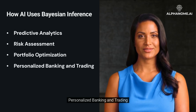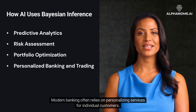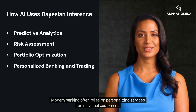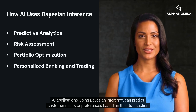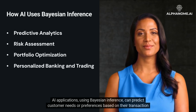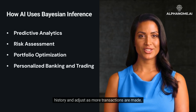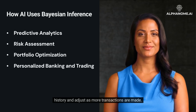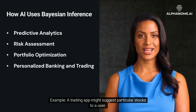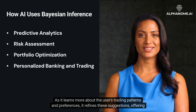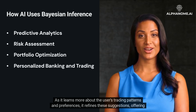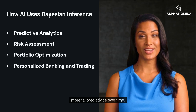Modern banking often relies on personalizing services for individual customers. AI applications, using Bayesian inference, can predict customer needs or preferences based on their transaction history and adjust as more transactions are made. For example, a trading app might suggest particular stocks to a user. As it learns more about the user's trading patterns and preferences, it refines these suggestions, offering more tailored advice over time.